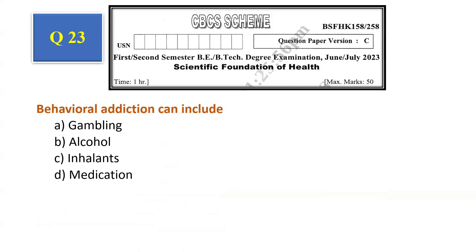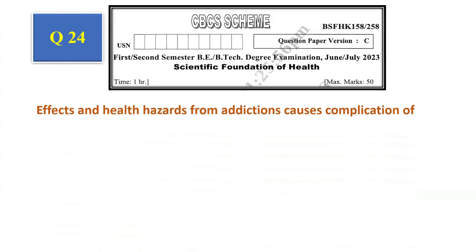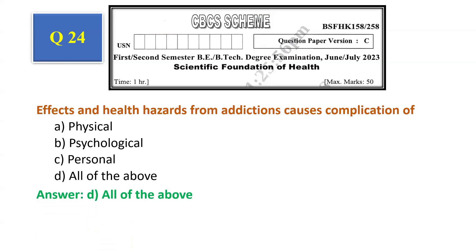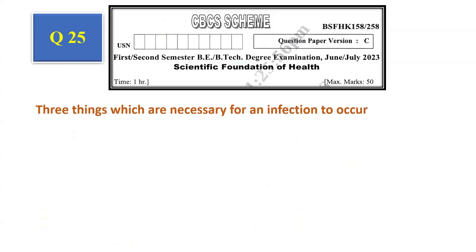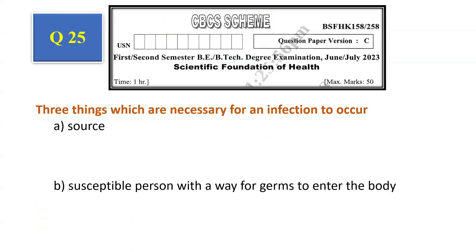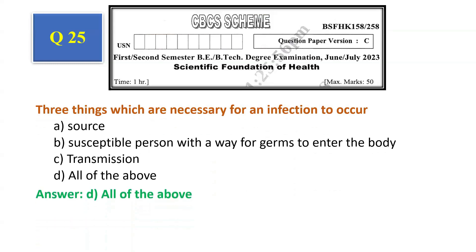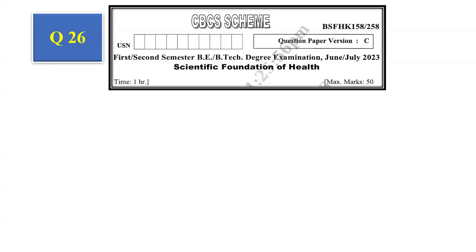Question number 23: Behavioral addiction can include — gambling, alcohol, inhalants, medication. The answer is alcohol, that is option B. Question number 24: Effects and health hazards from addictions — causes complications of physical, psychological, personal, all of the above. The answer is all of the above, that is option D. Question number 25: Three things necessary for an infection to occur — source, susceptible person with a way for germs to enter the body, transmission, all of the above. The answer is all of the above, that is option D.